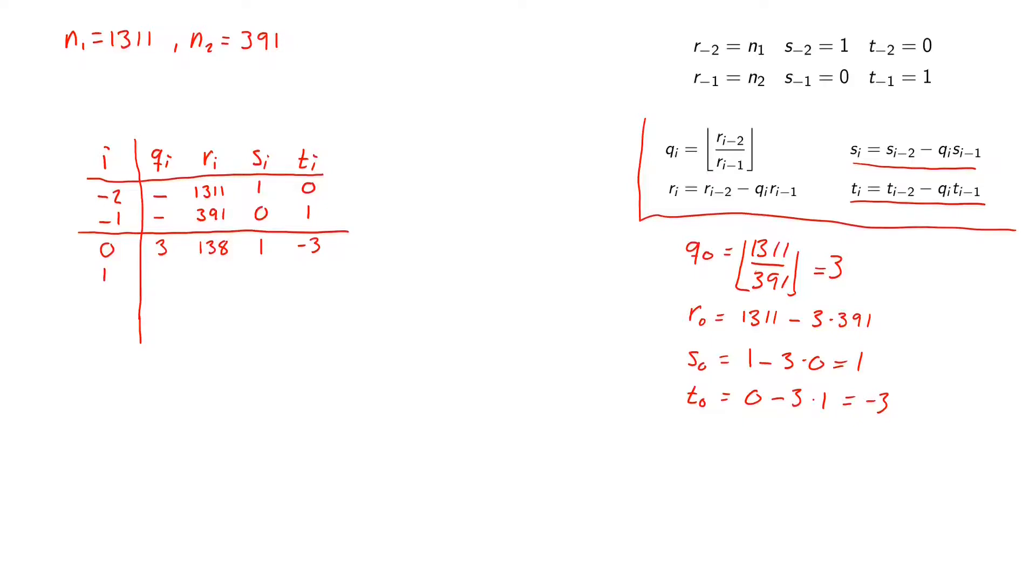We have the next q. So q_1 will be 391 divided by 138. Rounded downwards we will have 2 with the remainder 115. The next s will be 0 minus 2 times 1, so here we have minus 2. And t_1 will be 1 minus 2 times minus 3, which t_1 will be 7. This will be 7.